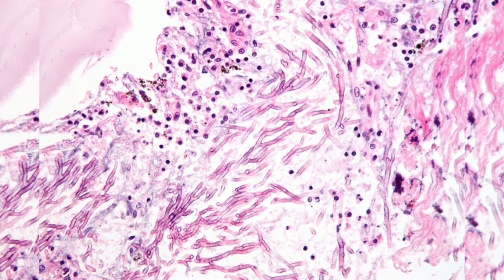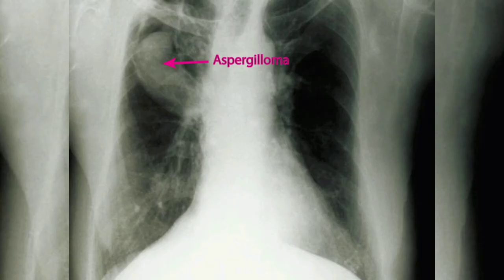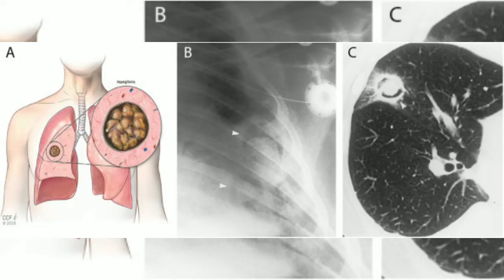Aspergillus fumigatus is the common species to cause human disease. Systemic aspergillosis occurs in the following types: pulmonary aspergillosis and disseminated aspergillosis. Pulmonary aspergillosis includes: number one — Aspergillus asthma, bronchopulmonary aspergillosis, Aspergilloma, and invasive aspergillosis.